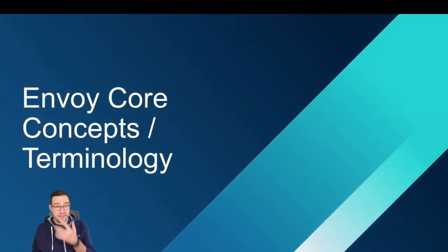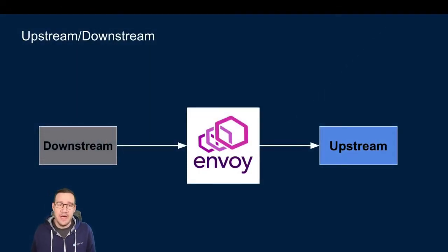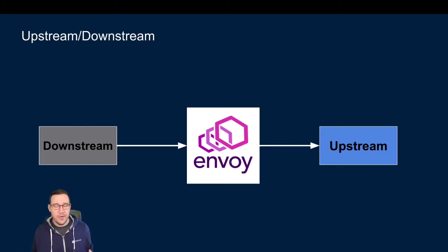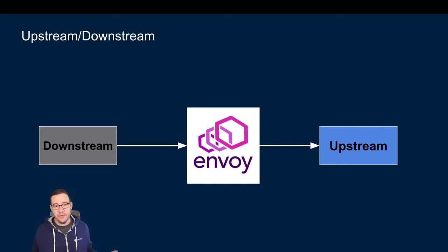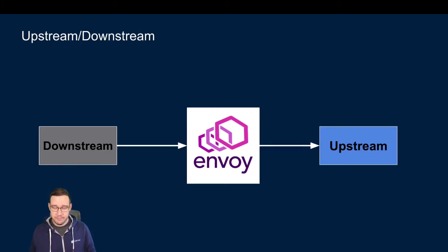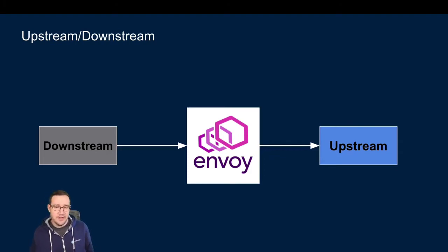Let's dig into some core concepts and terminology in Envoy. The first thing I want to talk about is the difference between upstream and downstream. Any request that's in Envoy and routes somewhere to some endpoint — this is what we call the upstream. Any request that comes to Envoy from outside — this is what we call the downstream. So requests will flow from downstream to Envoy, and then from Envoy to an upstream.